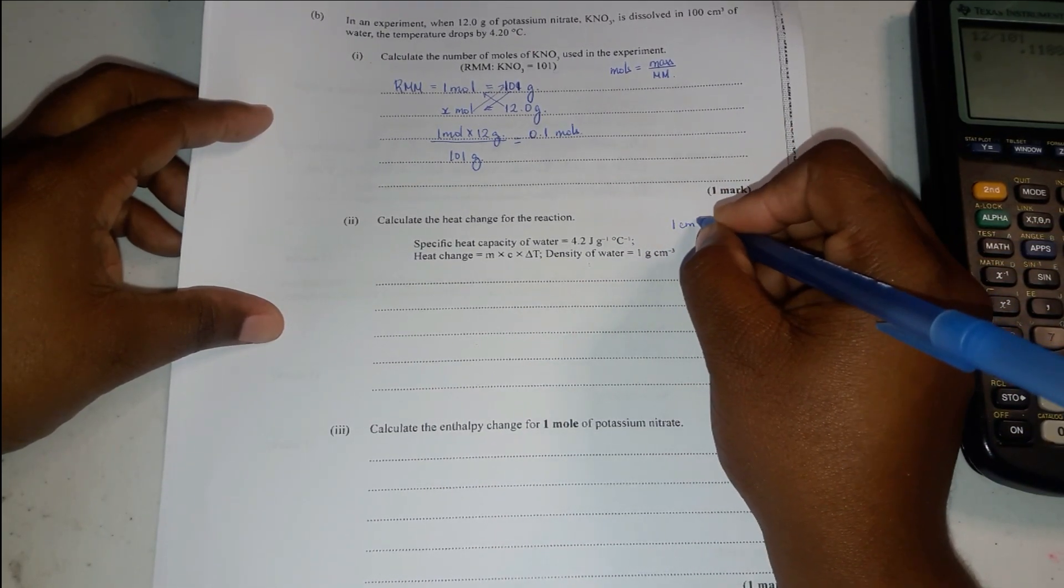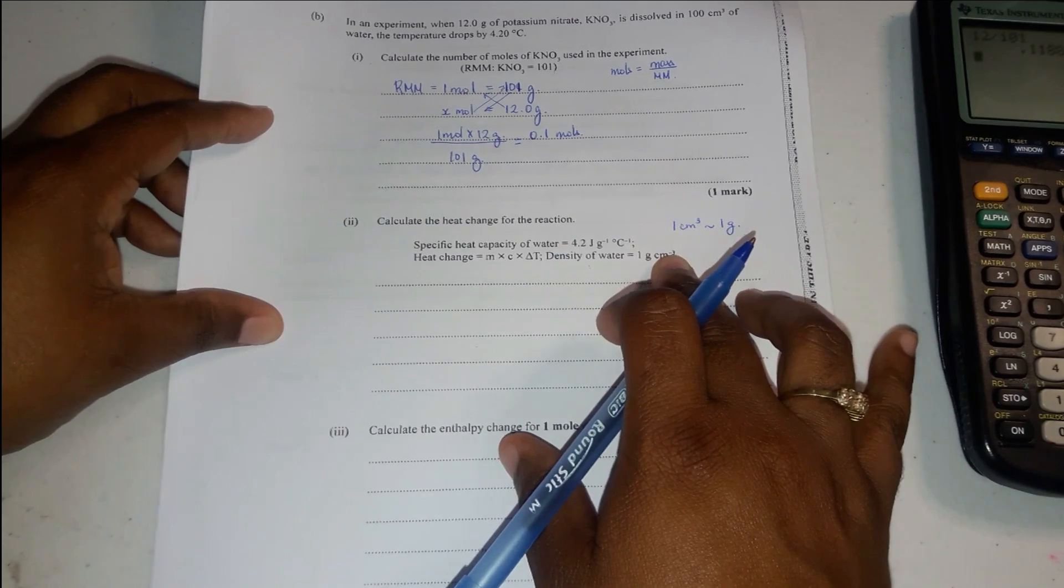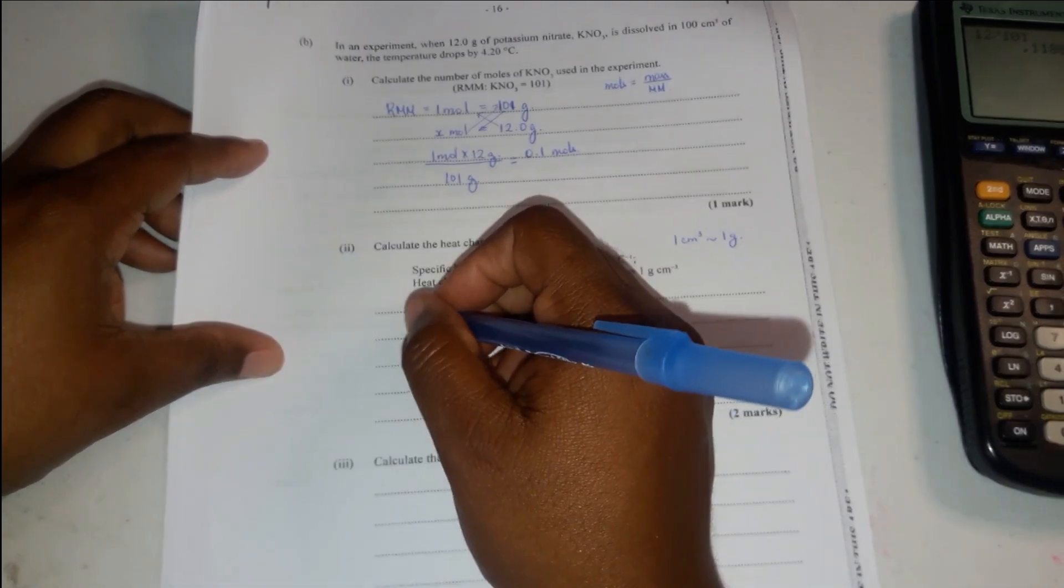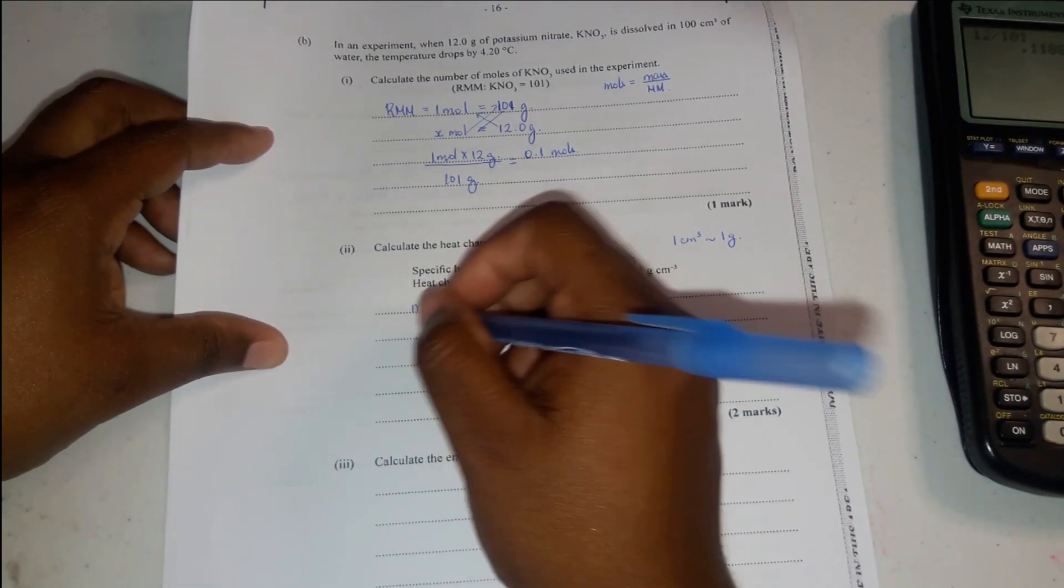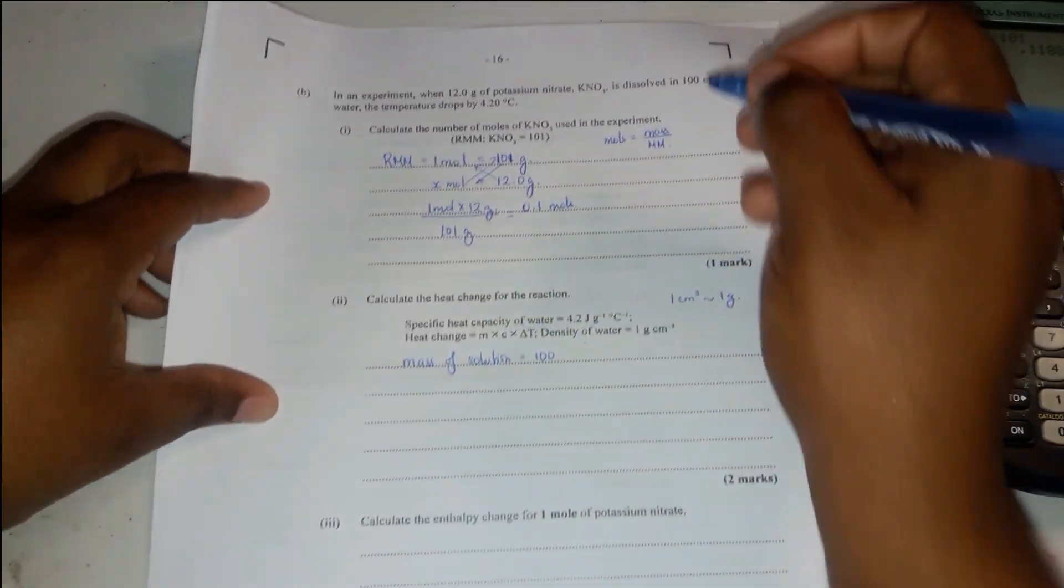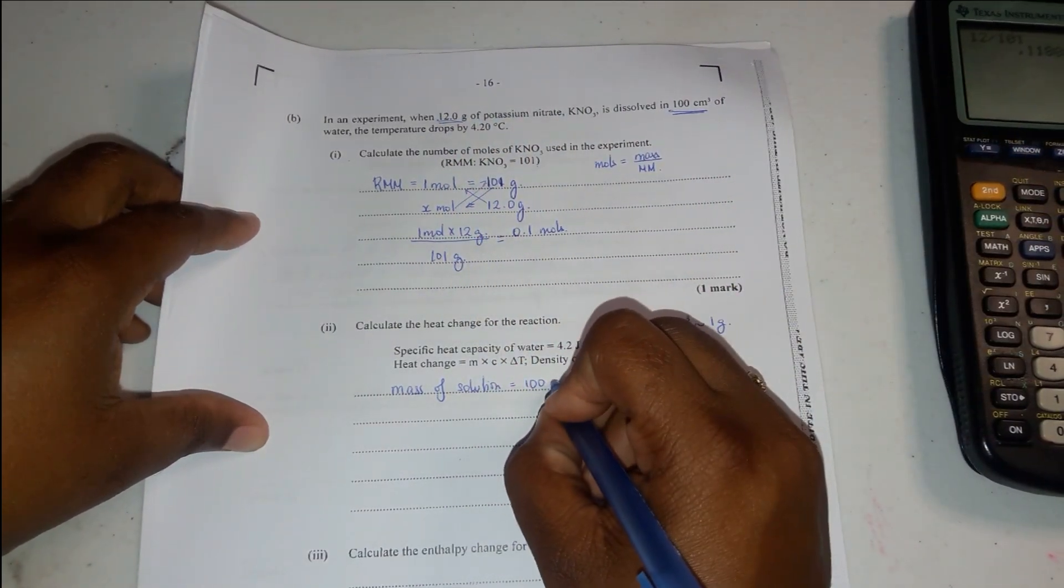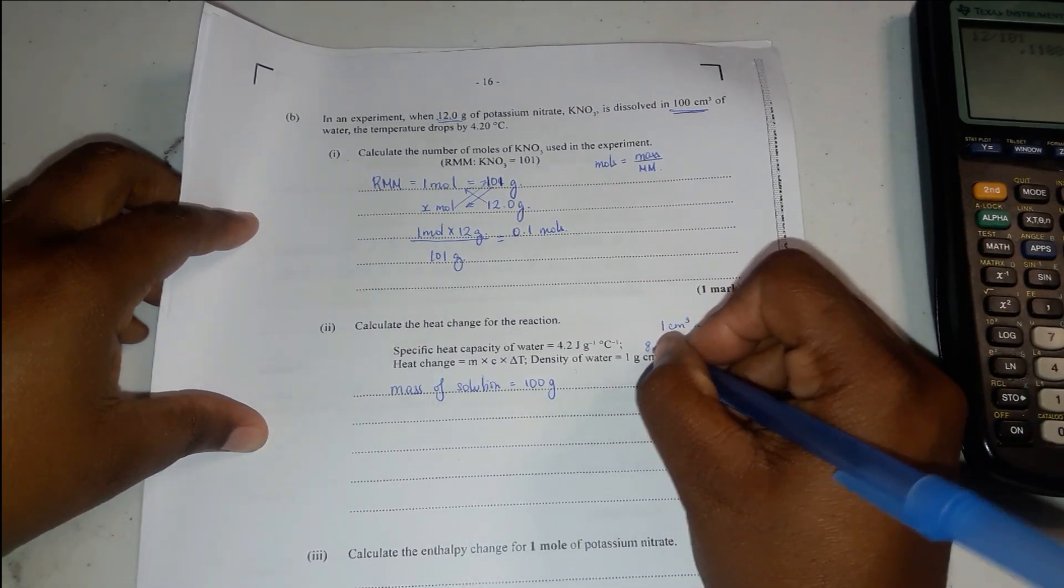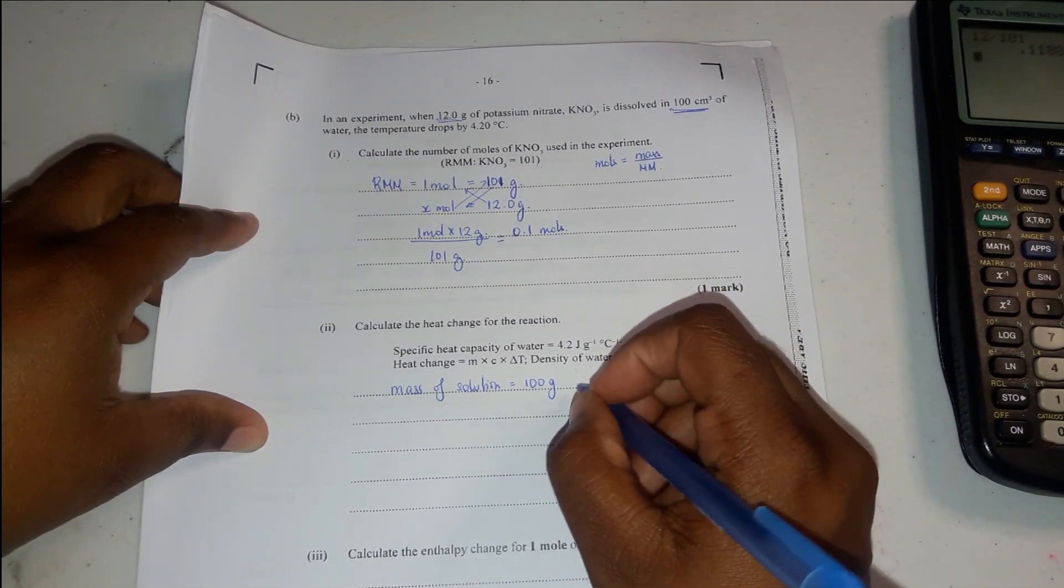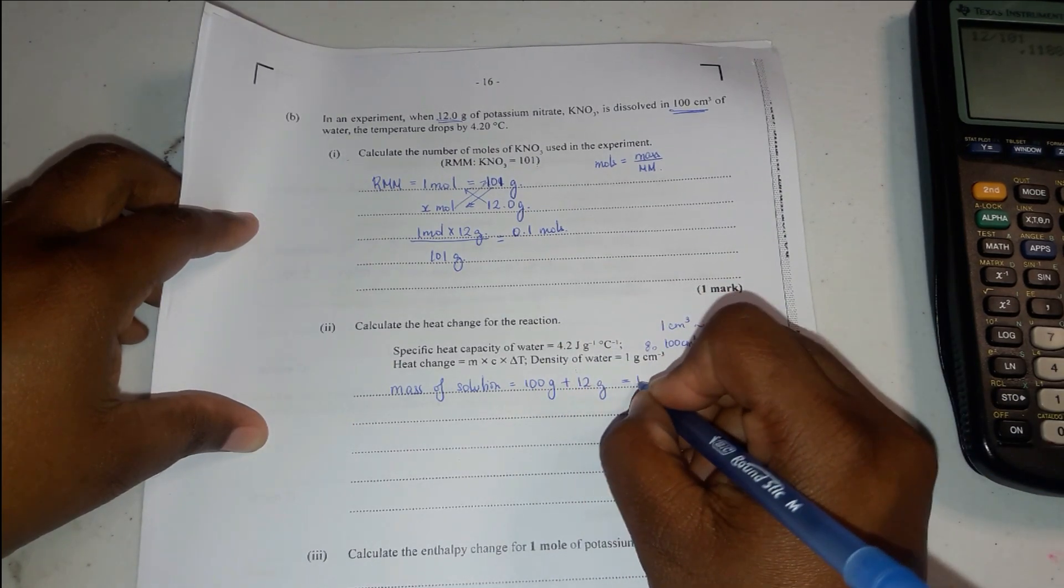In other words, if you have 1 centimeter cubed, then we say it's 1 gram. We work out first the mass of the solution. You would include the 100 centimeters cubed and the 12 grams because they're making a solution. So 100 centimeters cubed is approximately 100 grams, and we're going to add the 12 grams, which should give us 112 grams.